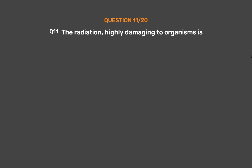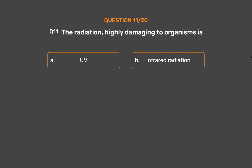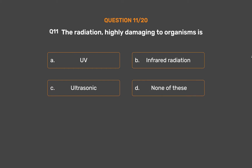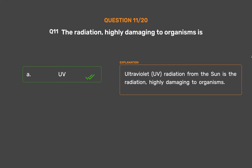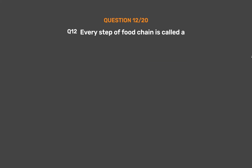Question number 11: The radiation highly damaging to organisms is — Option A: UV, Option B: Infrared radiation, Option C: Ultrasonic, Option D: None of these. The correct answer is Option A, UV. Ultraviolet (UV) radiation from the sun is the radiation highly damaging to organisms.